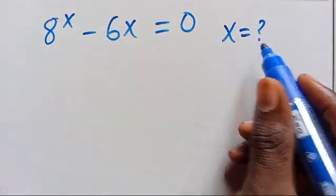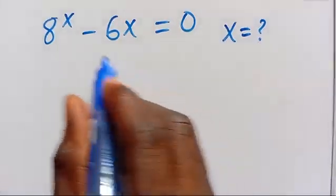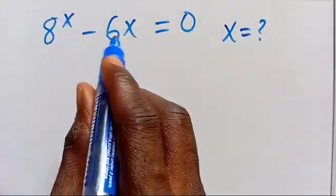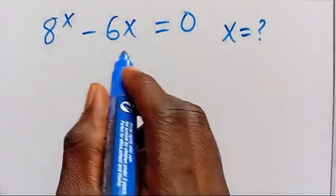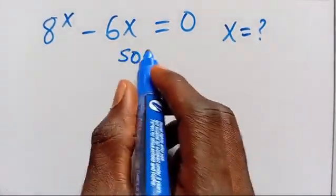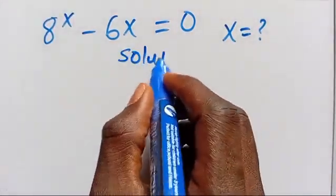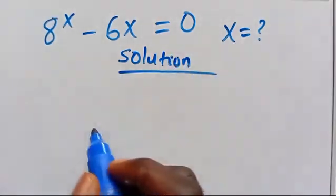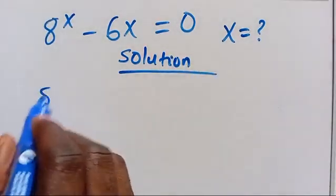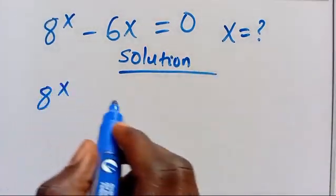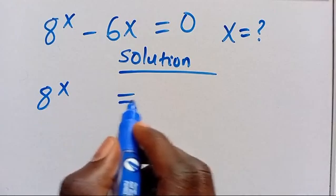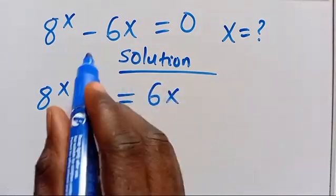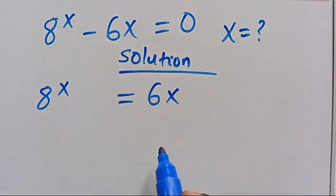What is the value of x given that you have 8 to the power of x minus 6x equals zero? Let's find the solution. From here we have 8 to the power of x equals 6x by taking this onto the other side.